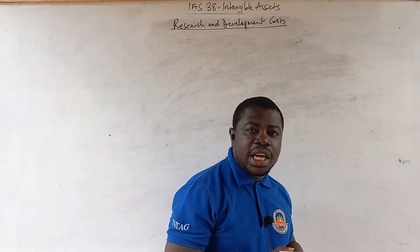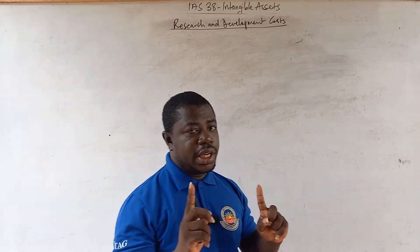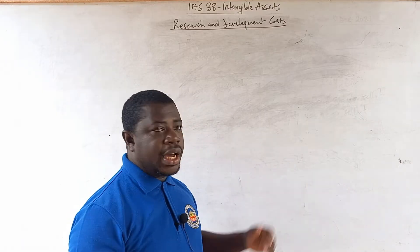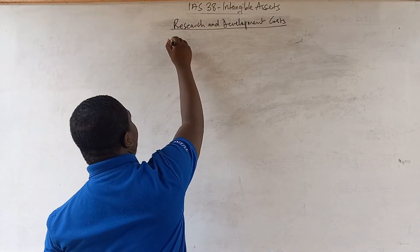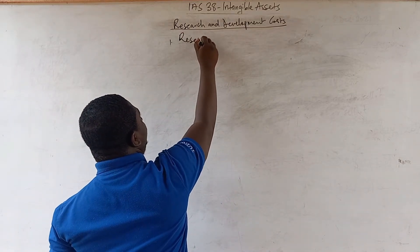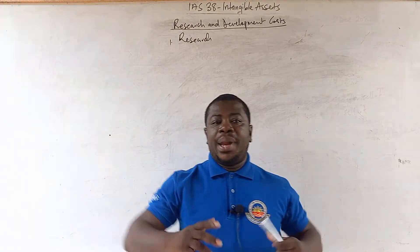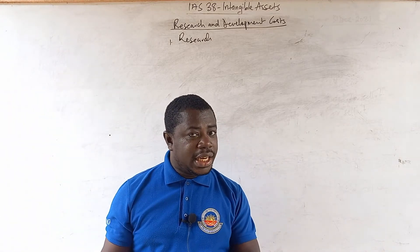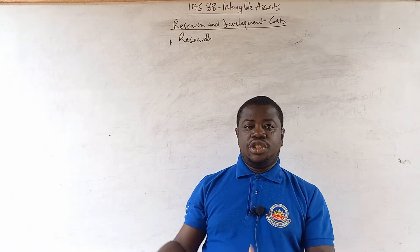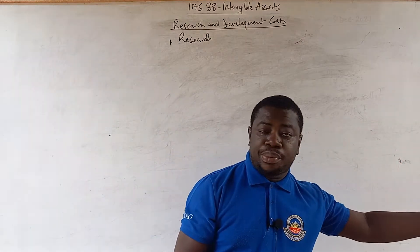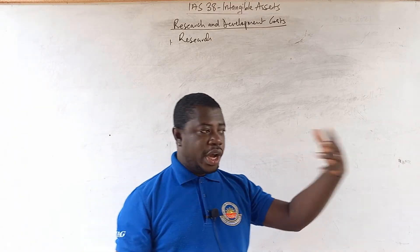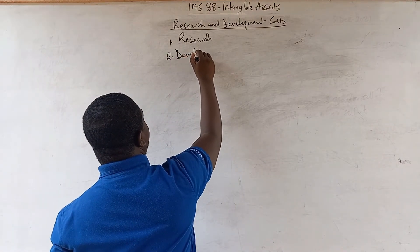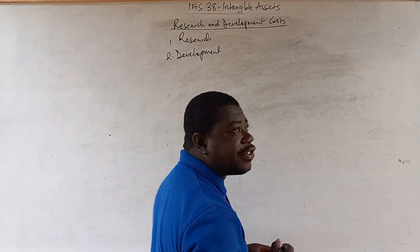Research and development are two separate things. Research has to do with a planned and original investigation aimed at gaining scientific or technical knowledge. Development is the application of the knowledge gained from research to develop a process, a machine, or a system that will help the organization achieve a targeted goal. So research gives birth to development. Once you have conducted research to get technical knowledge, you apply the findings to develop a process, machine, or system targeted at achieving a particular goal for the organization.